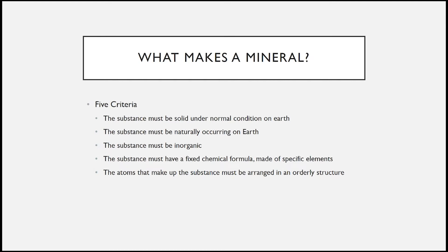The next criteria is that the substance must be naturally occurring on earth, meaning it should not be man-made. There are some crystals that are made by humans, and we cannot consider them as minerals because these crystals did not occur naturally on earth or did not undergo a natural or geologic process. The third criteria is that the substance must be inorganic, meaning the mineral must not come from a living organism.